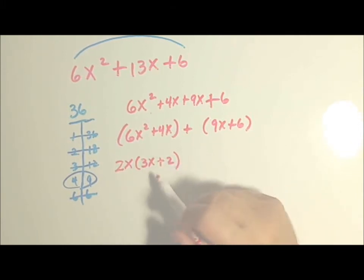Now always double check by multiplying it through distribution. 2 times 3 is 6. x times x is x squared. 2x times 2 is 4x. I've done it right. And guess what? That is my first factor.